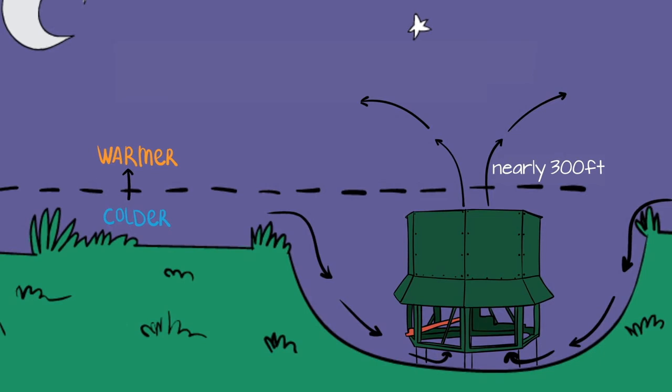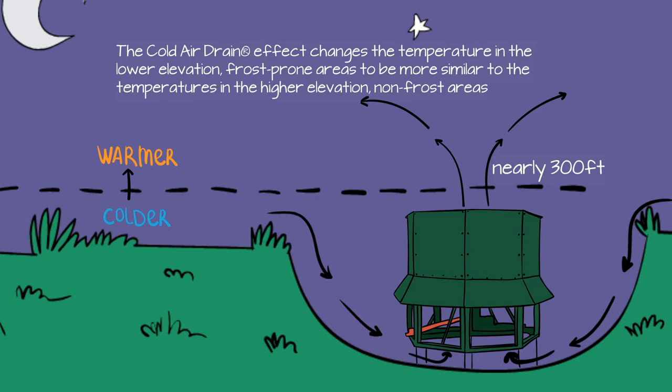The cold air drain effect changes the temperature in the lower elevation, frost-prone areas to be more similar to the temperatures in the higher elevation, non-frost areas.